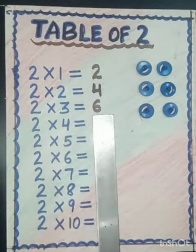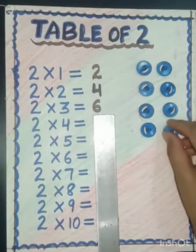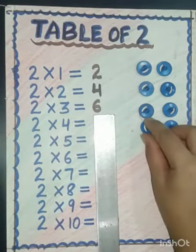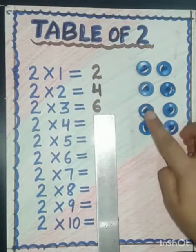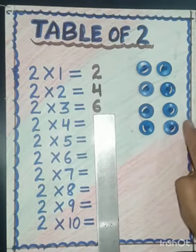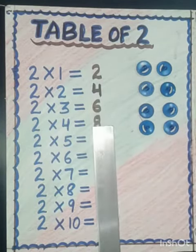Two fours are — again we will add two more. So let's count: one, two, three, four, five, six, seven, eight. So two fours are eight.